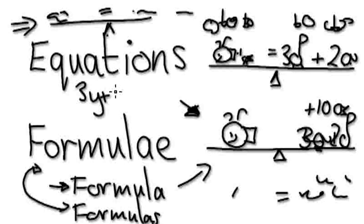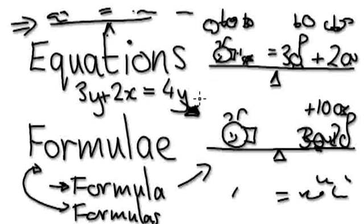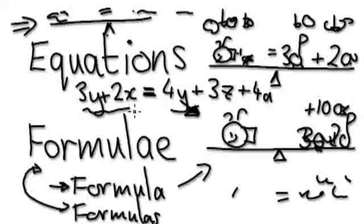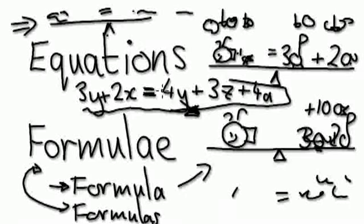For example, let's say 3y plus 2x equals 4y plus 3z plus 4a. As long as these two sides are equal, this is an equation.